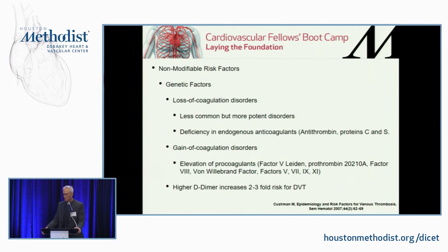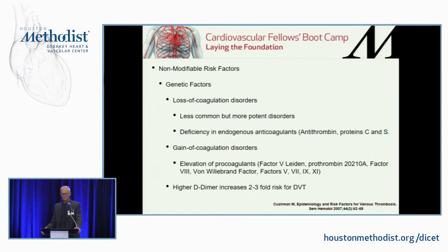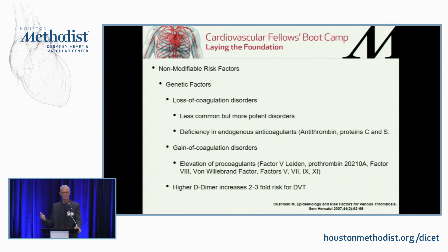Genetic factors: loss-of-function coagulation disorders — less common but more potent — include deficiency in endogenous anticoagulants like antithrombin, protein C, or protein S. When someone comes in with a DVT and someone orders a hypercoagulable workup, you can do things like antibodies, the prothrombin gene test, or Factor V Leiden — because those are genetic tests, not functional tests, and aren't dependent on their current coagulation activity.